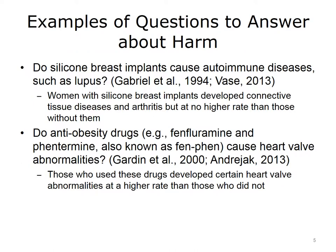Here are some examples from the news media about whether things cause harm. Back in the early and mid-1990s, there was the issue of whether silicone breast implants caused autoimmune diseases such as lupus and rheumatoid arthritis. It was true that some women who had implants developed these connective tissue diseases, but they didn't develop them at a higher rate than those with no breast implants. So silicone breast implants don't appear to cause these autoimmune diseases. Another question was whether anti-obesity drugs such as fenfluramine and phentermine, also called fen-phen, caused heart valve abnormalities. It turned out that those who used the drugs actually did develop certain heart abnormalities at a higher rate than those who didn't.